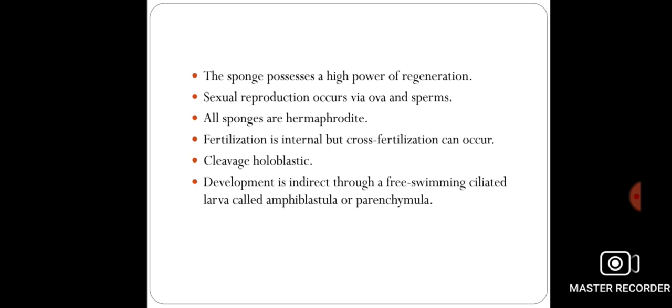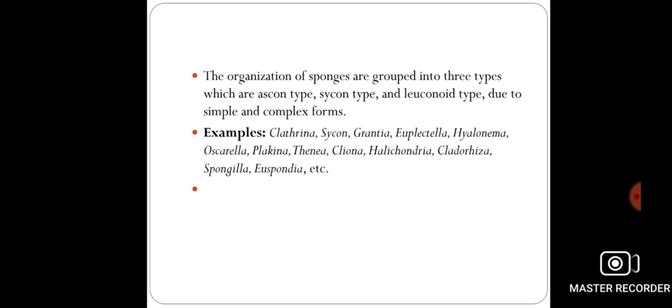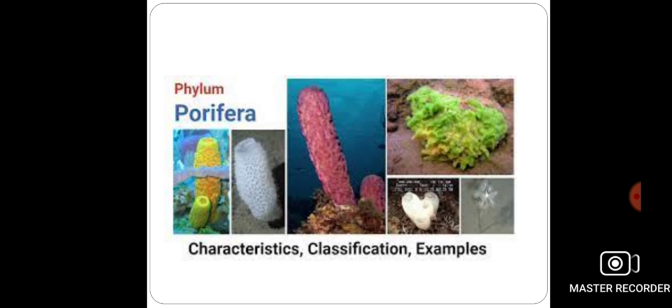Development in poriferans is always indirect, meaning it occurs through free-swimming ciliated larval stages. The larval stages of poriferans are called amphiblastula or parenchymula. Examples of poriferans include Sycon, Clathrina, Euplectella, Hylonema, Spongilla, and others.